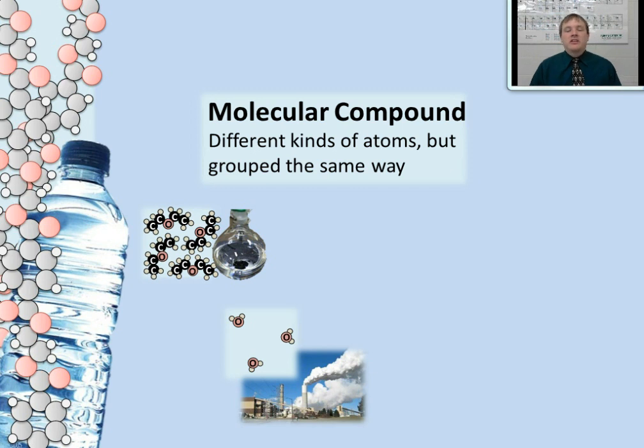Another example of a molecular compound would be water vapor. Even liquid water would be a molecular compound because it's made up of molecules of water. Water molecules are made up of one oxygen bonded to two hydrogen atoms, and because these molecules are all bonded the same way, that makes this a molecular compound. Different types of atoms bonded to make just one building block, one type of molecule.